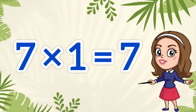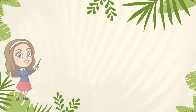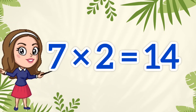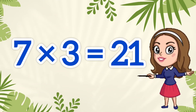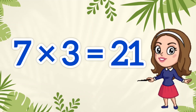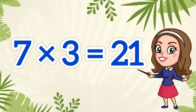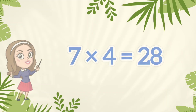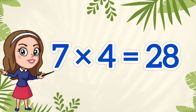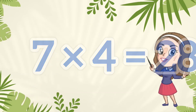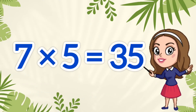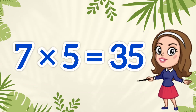Seven ones are seven. Seven twos are fourteen. Seven threes are twenty-one. Seven fours are twenty-eight. Seven fives are thirty-five.